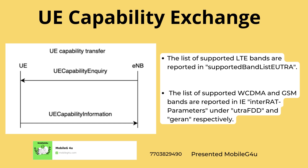With the help of these two messages — one is UE Capability Inquiry, which will come from the eNodeB, and the UE will respond with UE Capability Information — this message coming from the UE side will give you the capability of what all LTE bands are supported. If your device is supporting 2G and 3G as well, it will give you those band details also.